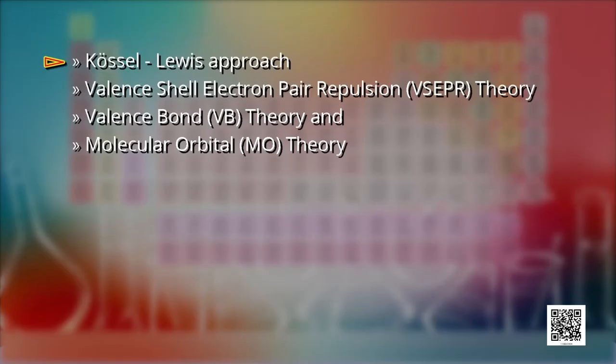To answer such questions, you will be learning different theories and concepts: the Kossel-Lewis approach, valence-shell electron pair repulsion theory, valence bond theory, and molecular orbital theory. Every system tends to be more stable, and bonding is nature's way of lowering the energy of the system to attain stability.